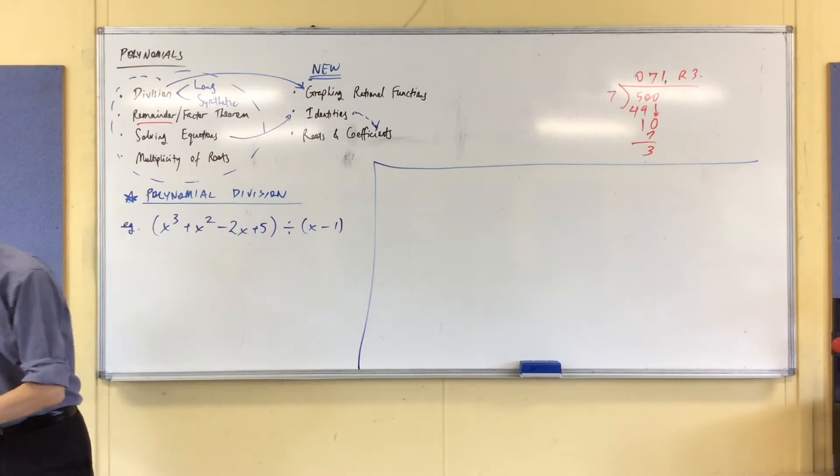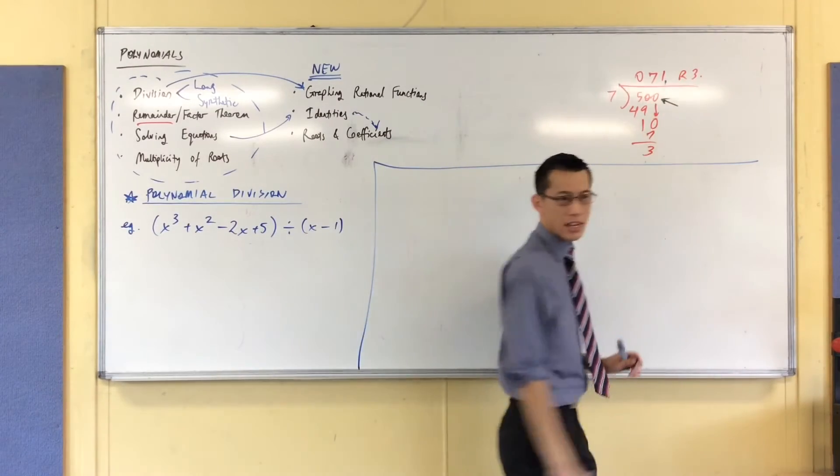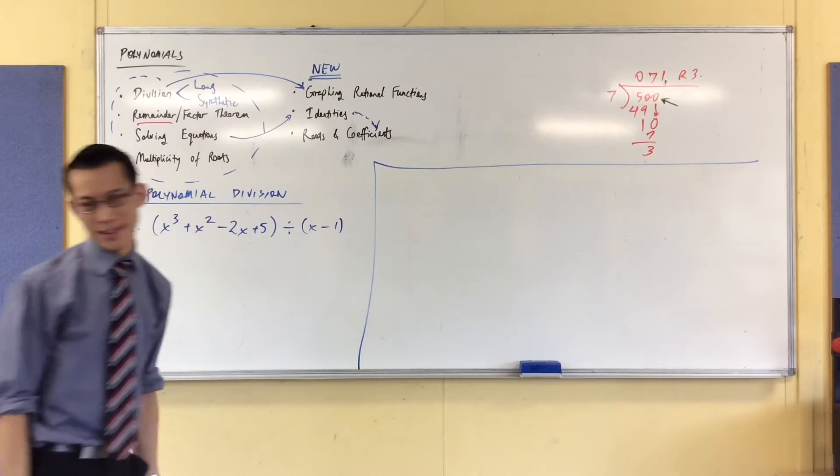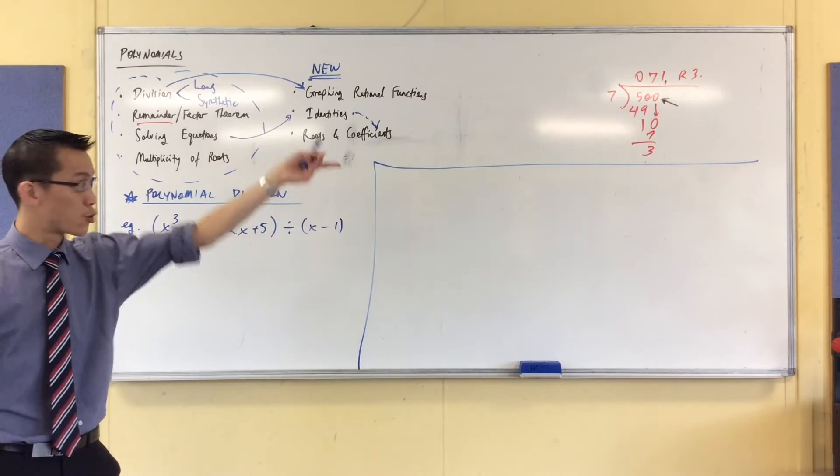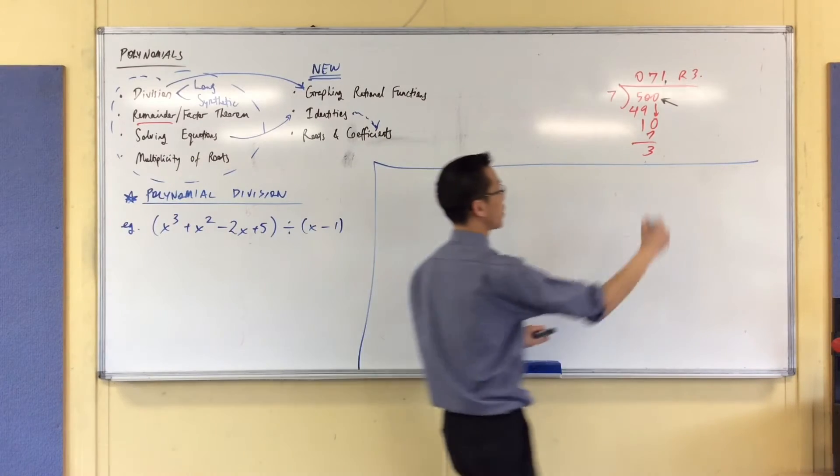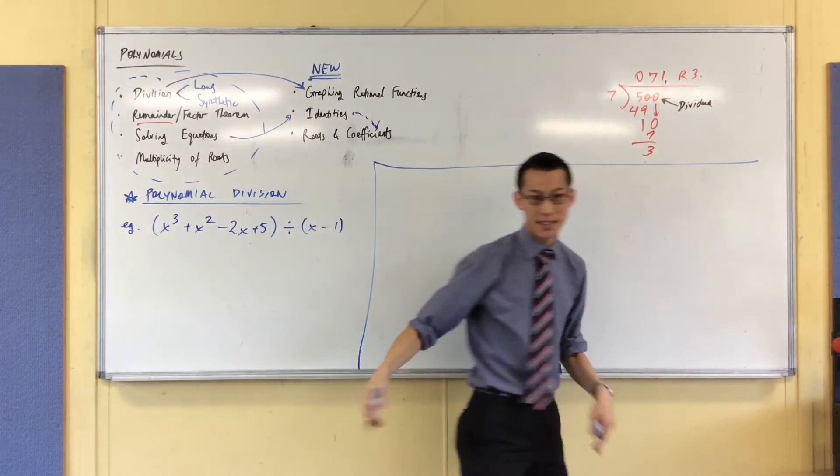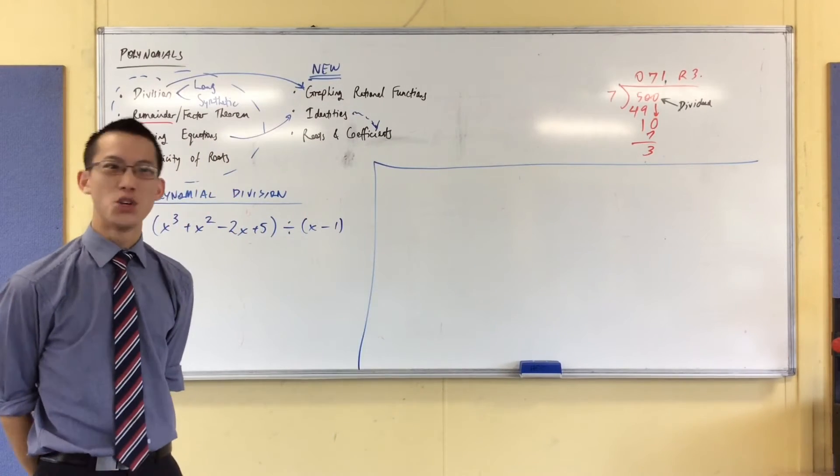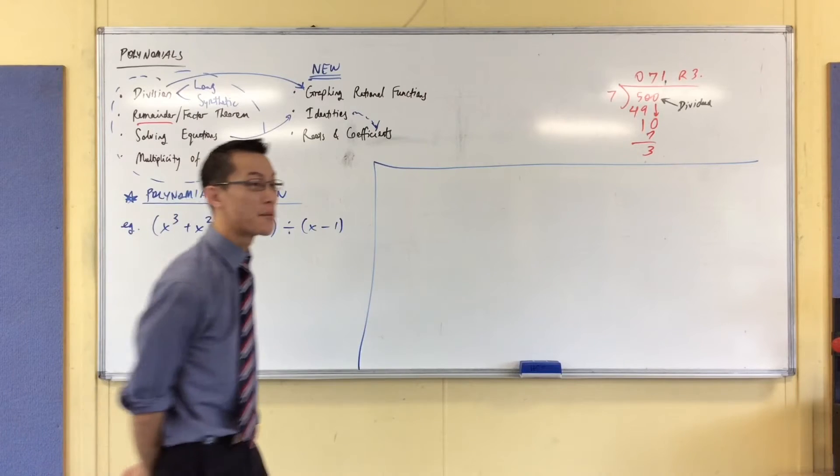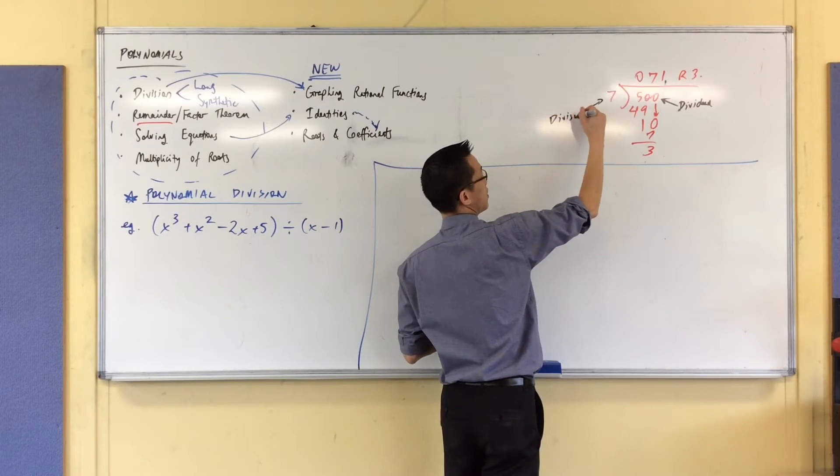And in case you can't remember what all of these things are called, this thing that you're dividing up, for those of you in the economist commerce world, it's something which gets shared out into 7. So that's called a dividend, which is why you get paid out dividends. That's the thing which gets distributed to people. 7 is the thing that's doing the dividing. I'm dividing by 7. That's the action here. So that's why we call it the divisor.